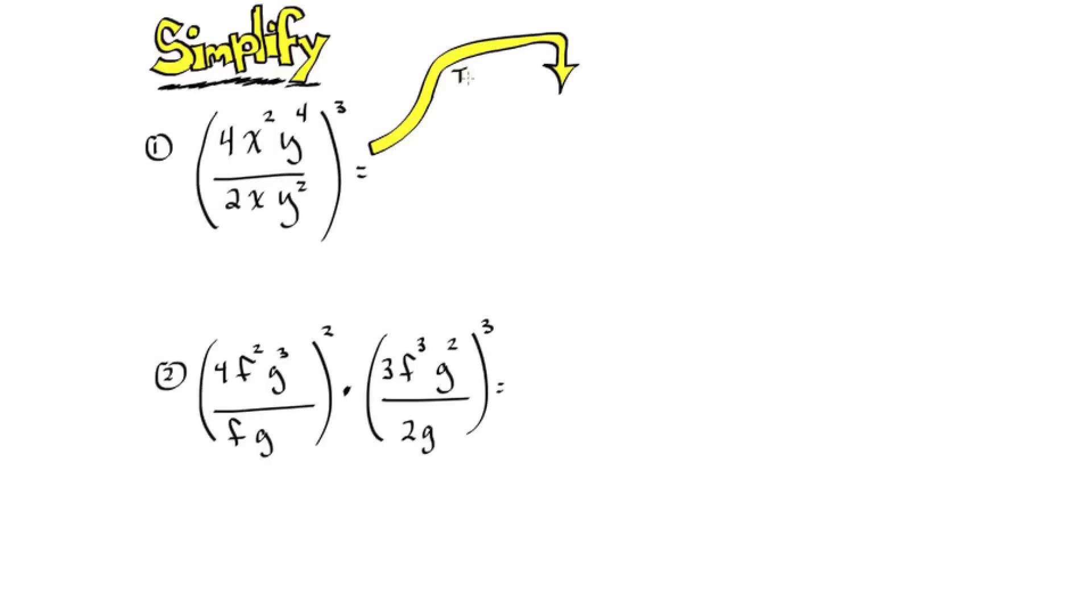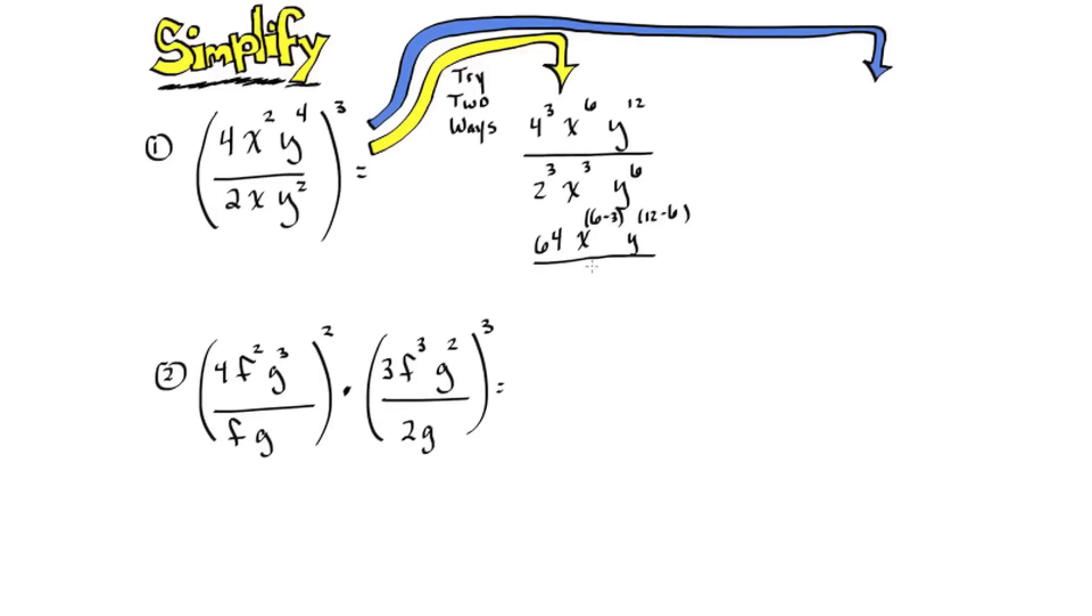So there are two ways to solve this problem. The first, let's distribute the power on the outside of the parentheses inside the powers on the basis. And then in the second step we're going to simplify the expression. So we use the quotient property to subtract the exponents and simplify the coefficients and we get 8x to the third y to the sixth.